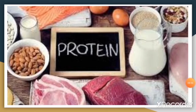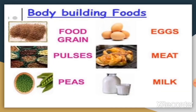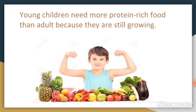The next food group is protein. Food items such as milk, egg, cheese, fish, meat, beans and pulses are rich in proteins. Food items rich in proteins are called body-building foods, as they help us to build our muscles. They are needed for the growth and repair of our body. Protein-rich food items include food grains, pulses, peas, egg, meat and milk. Young children need more protein-rich food items than adults because they are still growing.